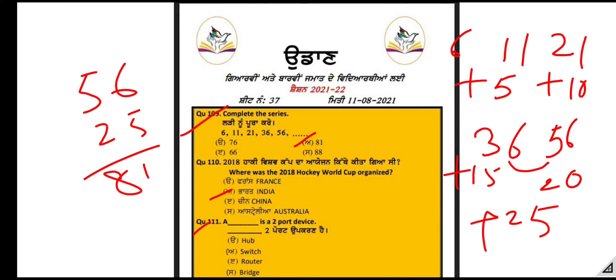Next question: A dash is a two-port device. The answer is bridge, because a bridge is a two-port device.